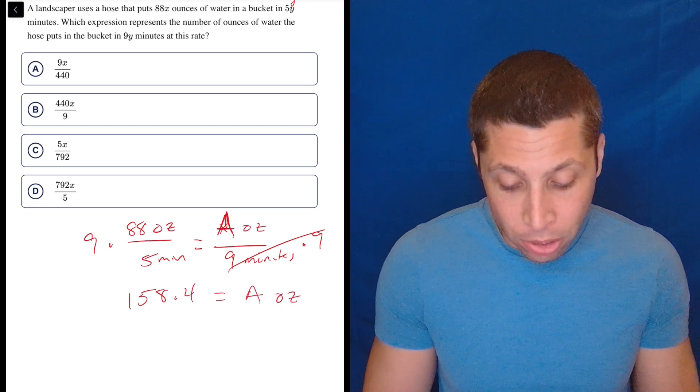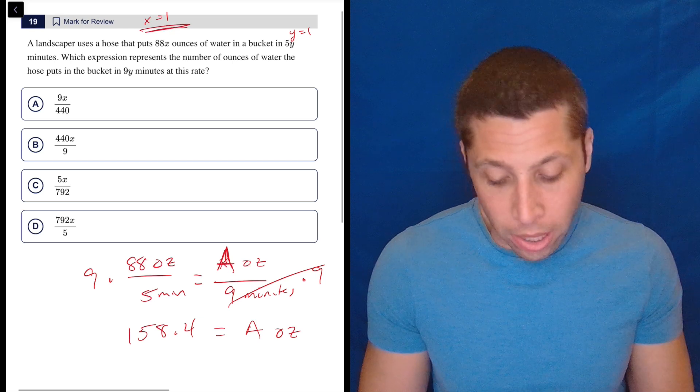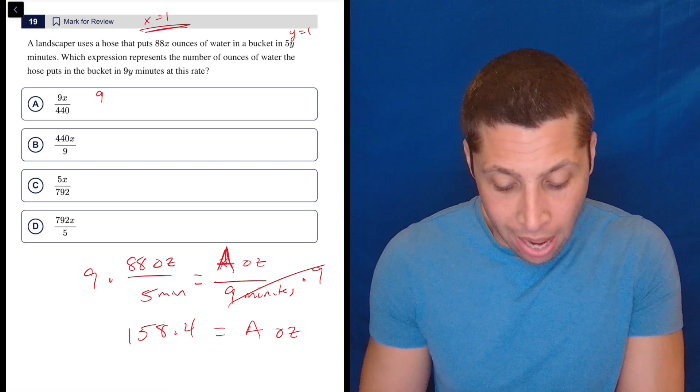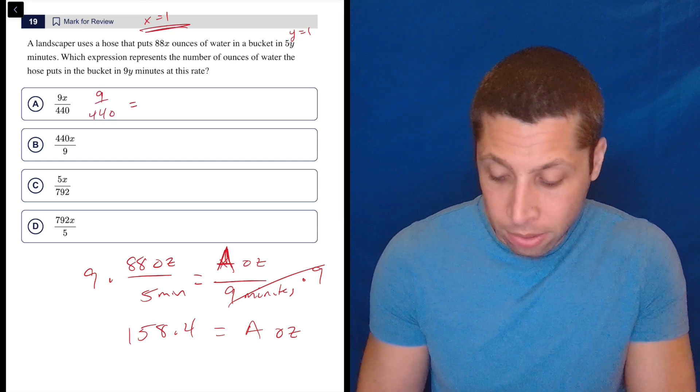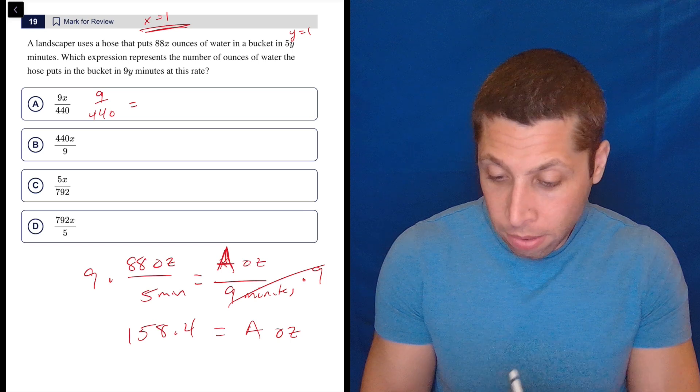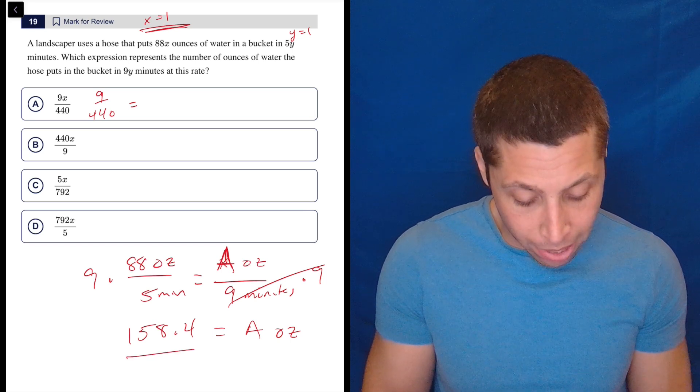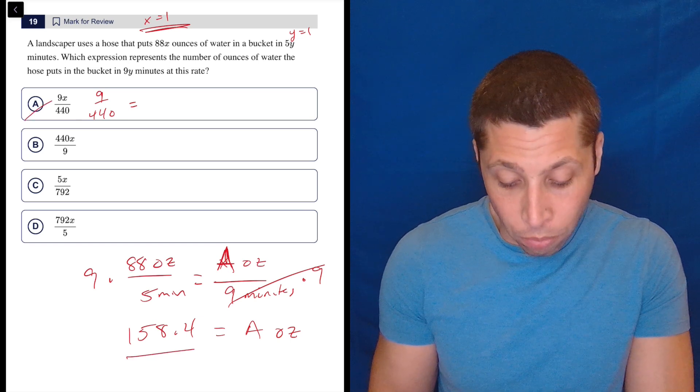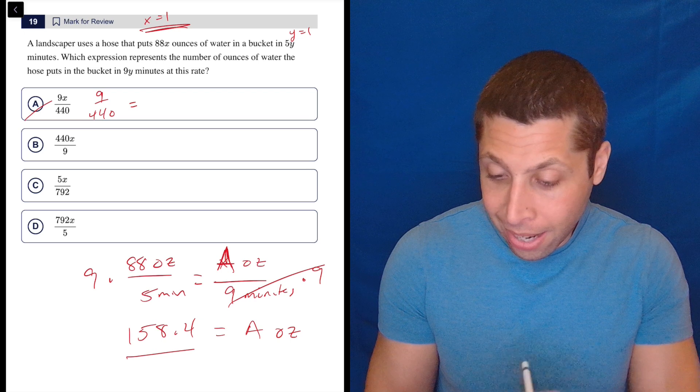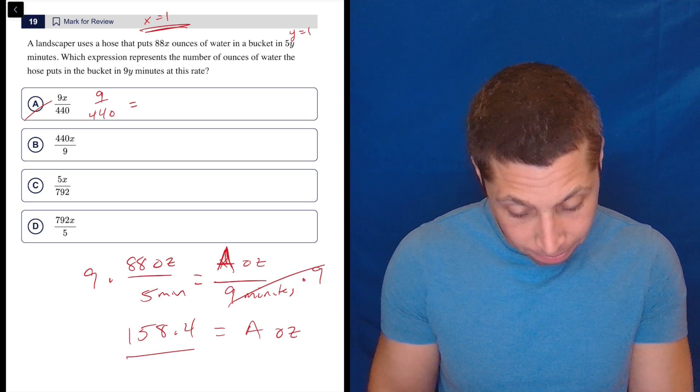Let's see if something gives me that. I'm putting X as 1 into all of these. So this is just 9 over 440. So 9 divided by 440 is 0.02, not 158. 440 divided by 9 is 48.